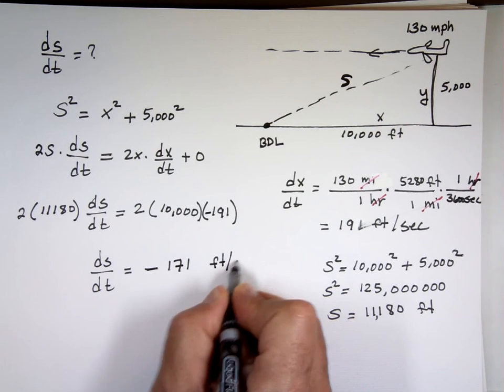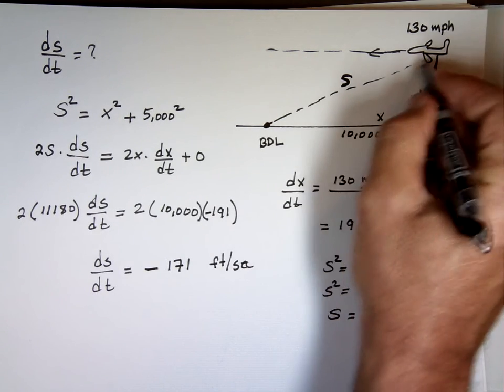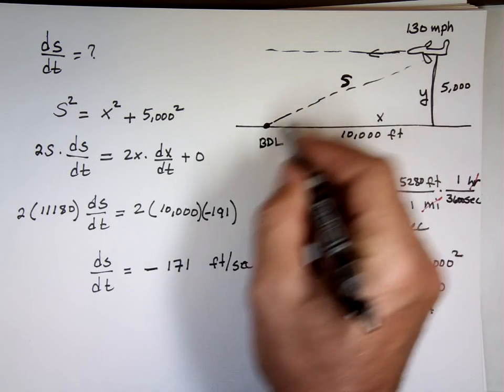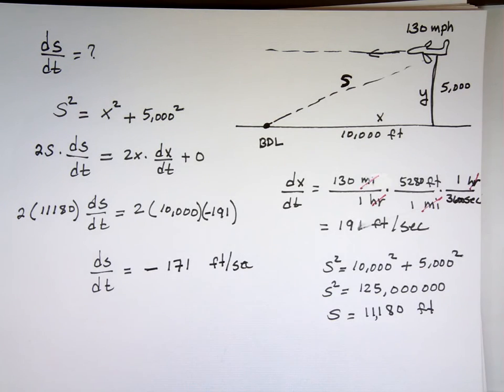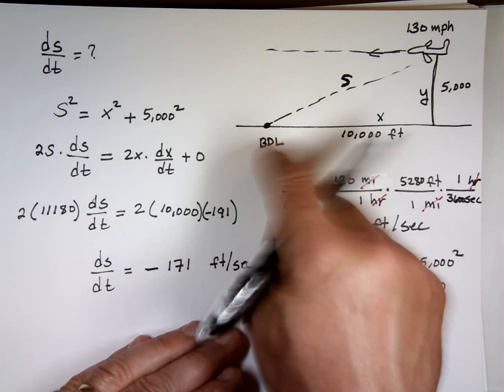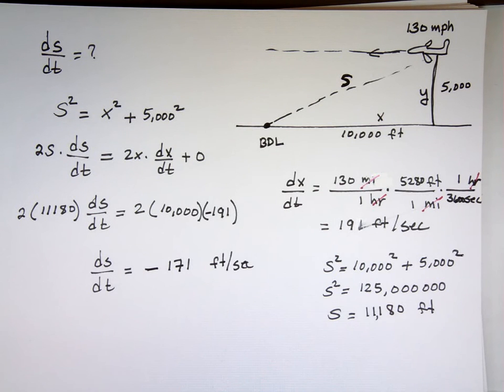That distance is decreasing at the rate, at that time, at the rate of 171 feet per second. As the plane gets closer and closer, that distance will start to decrease at a much faster rate. And that's how we deal with related rates. You see in a few examples, you'll have some homework on them.